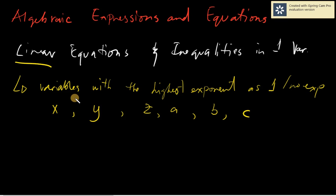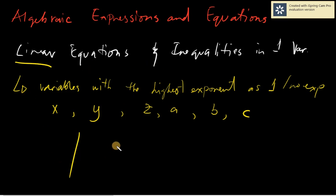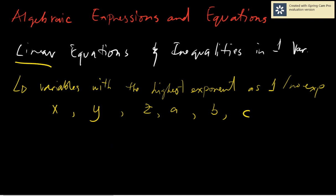In linear equations, we are dealing mostly with x and y. Just remember that the highest exponent is one. We are dealing with x and y because linear equations are equations that, when graphed, give you a line. And of course, to graph a line we would be using the Cartesian plane, which has an x-axis and a y-axis, and you plot points there.